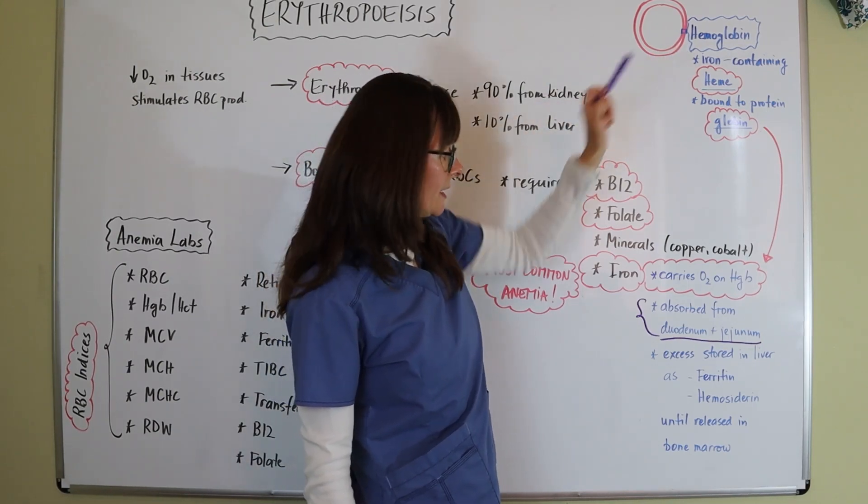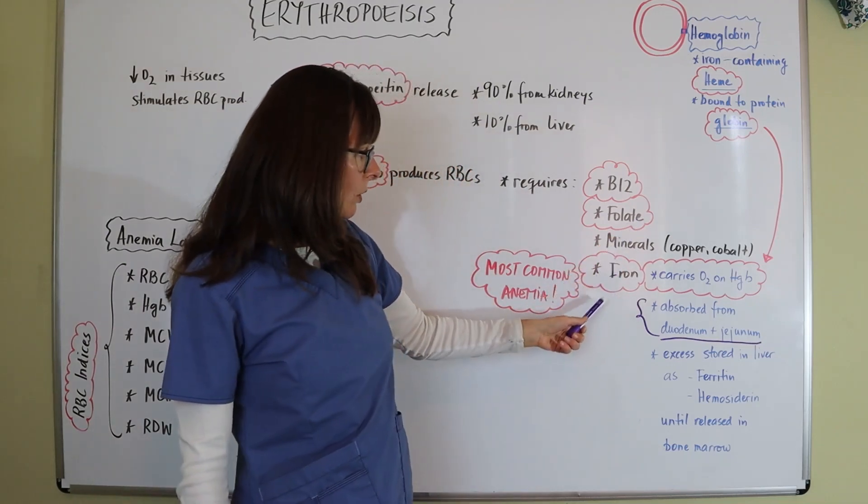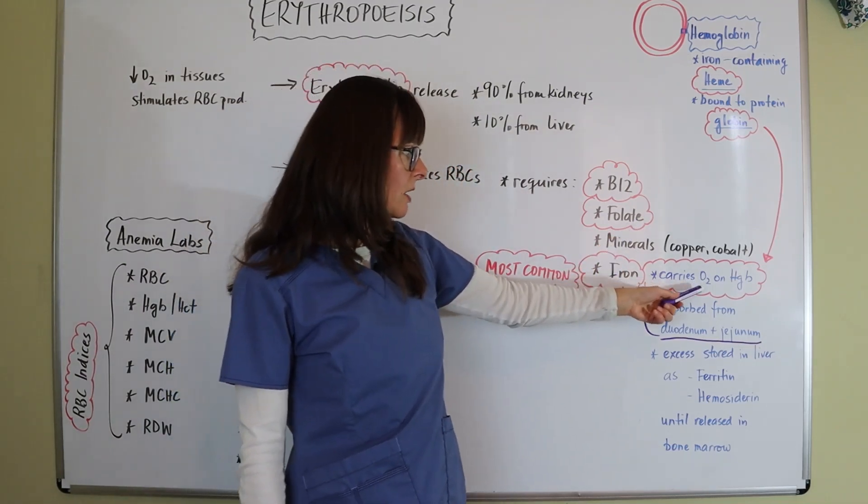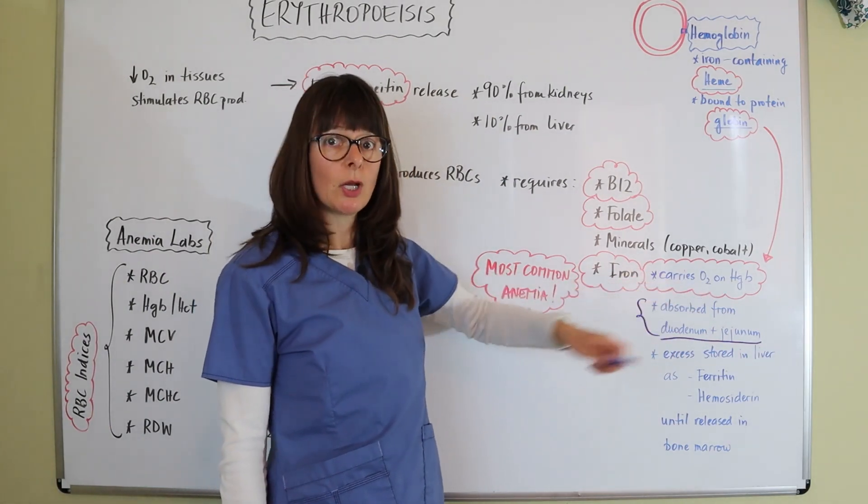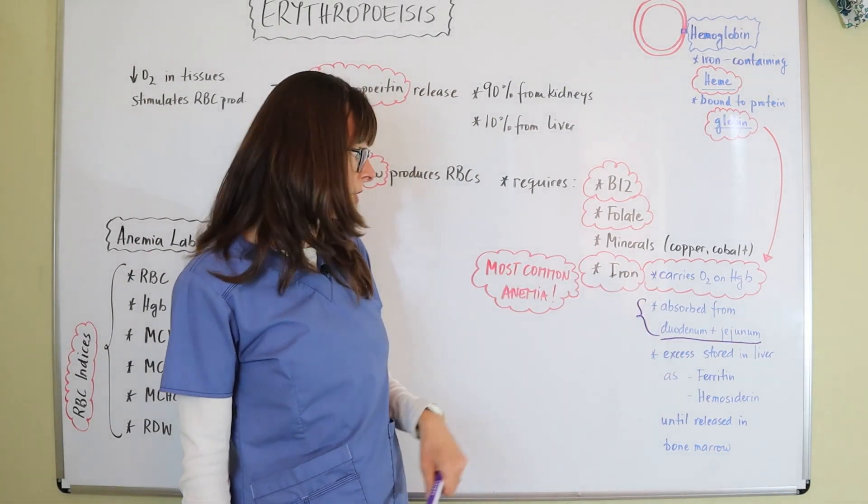And knowing that heme contains iron, we know here that iron carries that oxygen on the hemoglobin. So without iron and without hemoglobin, we're not going to have any oxygen in the tissues.